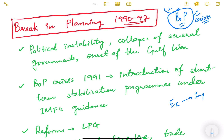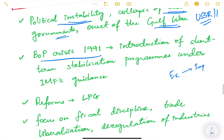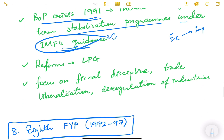The break in planning also happened due to political instability — Rajiv Gandhi had been assassinated and there was no stable leadership. There was the collapse of the USSR, and the onset of the Gulf War. All these different factors affected our economy. The balance of payment crisis of 1991 led to introduction of short-term stabilization programs under IMF guidance. Reforms like LPG — liberalization, privatization, and globalization — came during this period.